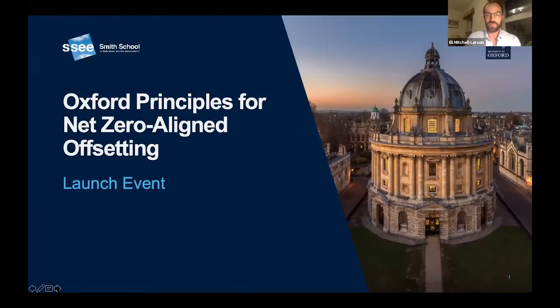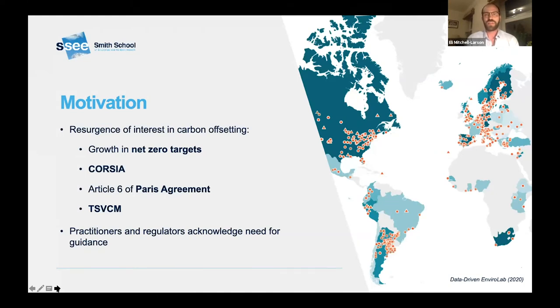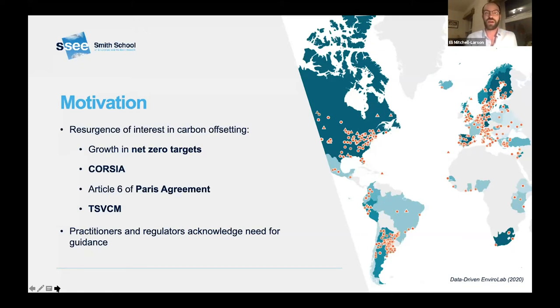Thank you, Ben. So Ben touched on the motivations that inspired the Oxford Principles for Net Zero Aligned Carbon Offsetting — the proliferation of net zero targets, industry initiatives like CORSIA, ongoing questions about Article 6 and its impact on voluntary carbon markets, and the Mark Carney-led Task Force for Scaling Voluntary Carbon Markets. It's helpful to use the full title — the Oxford Principles for Net Zero Aligned Carbon Offsetting — because what we're discussing is a specific use case: using offsets in support of making a net zero emissions claim.